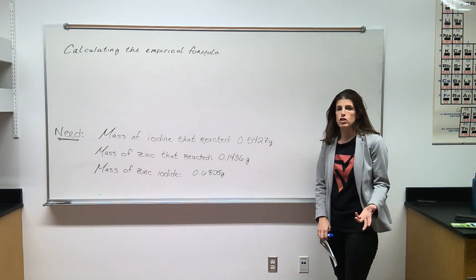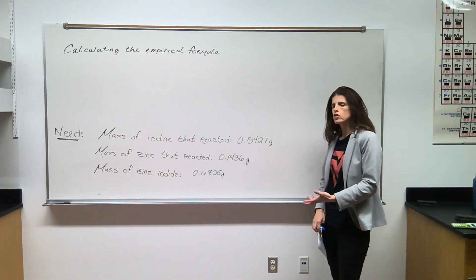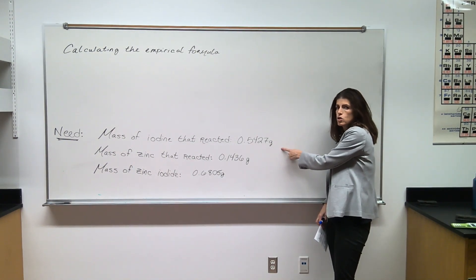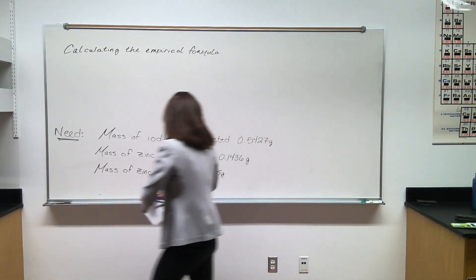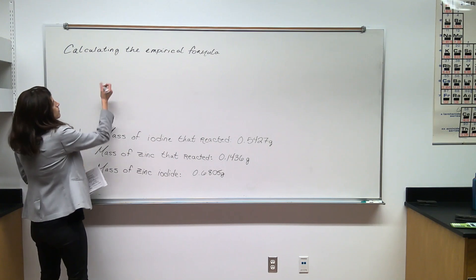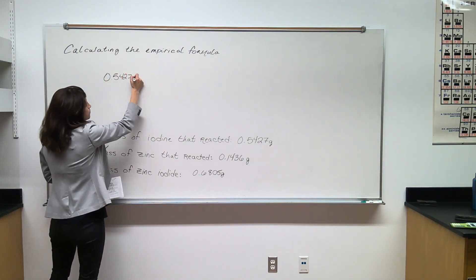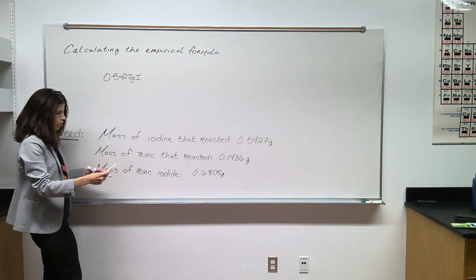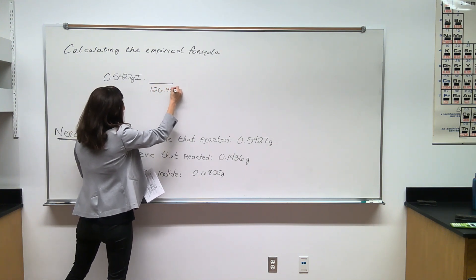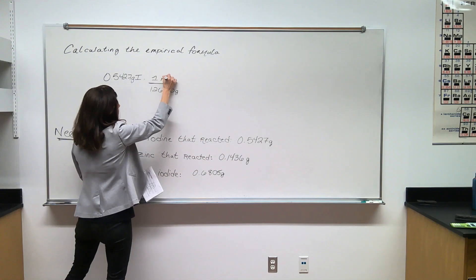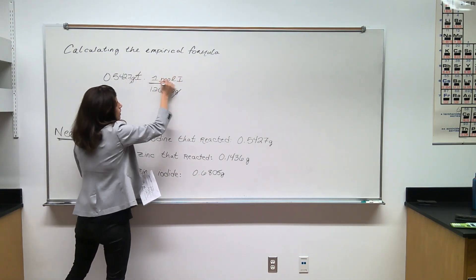In the second part of our calculation, we're going to work to determine the empirical formula of zinc iodide. In order to do that, we need to convert both the mass of iodine to moles of iodine and the mass of zinc to moles of zinc. Let's start with the mass of iodine. Since we had 0.5427 grams of iodine, we can divide by its molar mass. Grams cancel grams, leaving moles.